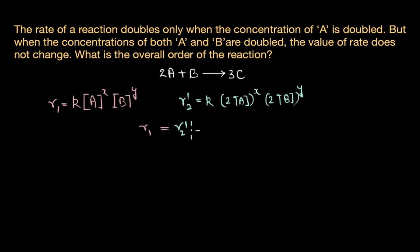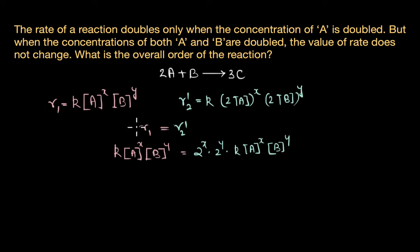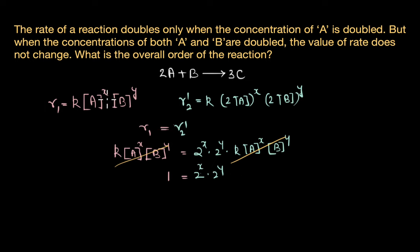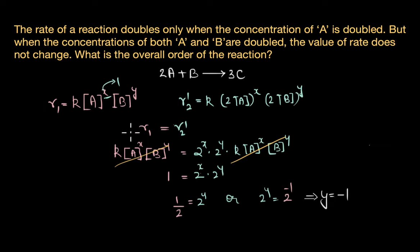Let's substitute these equations. When we do that we get K into A power X times B power Y equal to 2 power X times 2 power Y into K into A power X times B power Y. These terms cancel, giving us 1 is equal to 2 power X times 2 power Y. From our previous calculations we know X is equal to 1, so 1 divided by 2 is equal to 2 power Y, or 2 power Y is equal to 2 power minus 1. Therefore Y is equal to minus 1 — the order of the reaction with respect to B is minus 1.